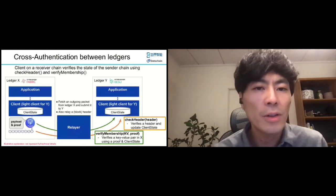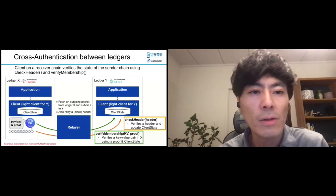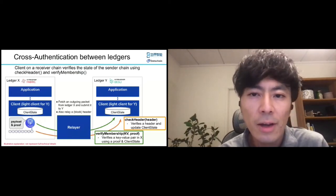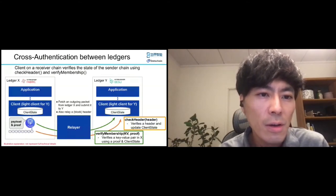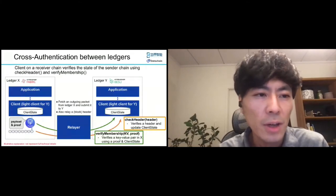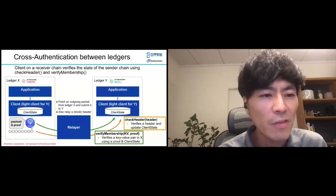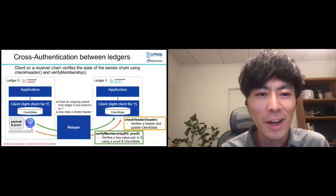IBC utilizes cross-authentication for verification, which means LedgerY's on-chain light client verifies a header and state in LedgerX. There's also a relayer that fetches and relays outgoing packets between chains X and Y, as well as block headers of each blockchain. A packet consists of a payload from one blockchain to another, and verifiable proof for it. There are two important functions to achieve cross-authentication: VerifyMembership and CheckHeader.